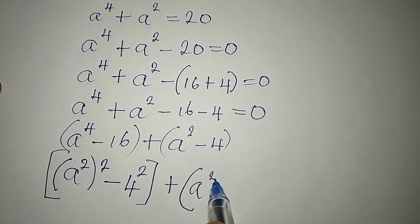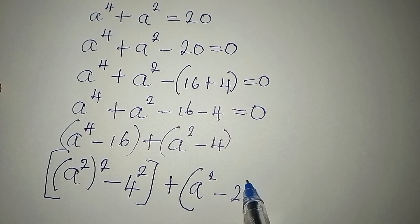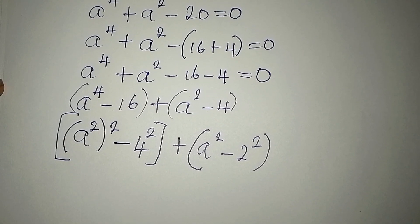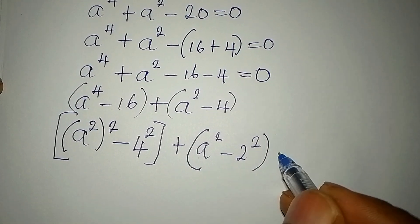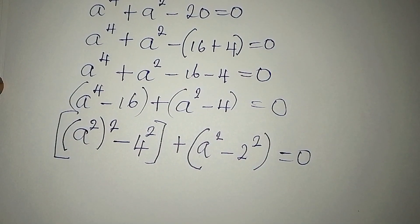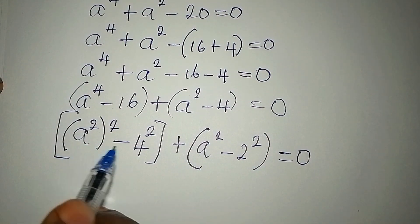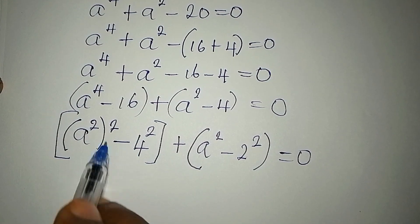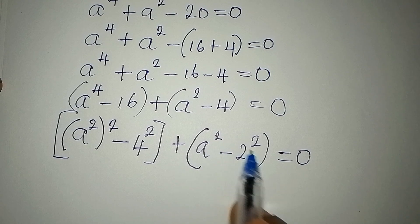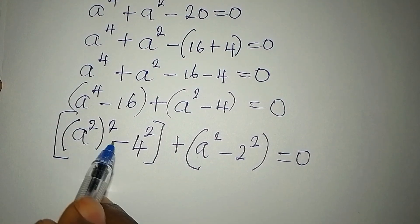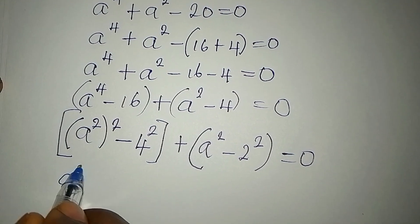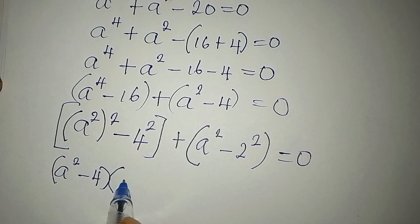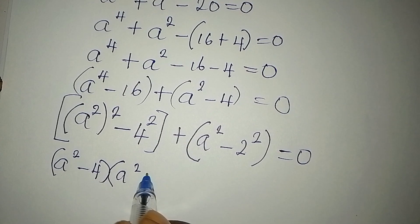We have A squared minus 2 squared, because 4 is 2 squared. Everything is equal to 0. We are supposed to use the difference of two squares because we can find a difference of two squares here, and we can also find it here. To apply the difference of two squares to the first group, we'll have A squared minus 4 into A squared plus 4.